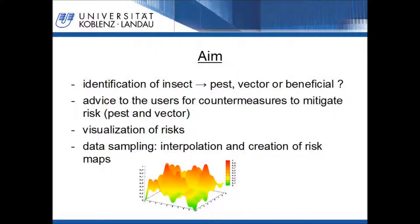Now to the aim — what we want to achieve with this method. We want to combine existing software tools, with which it is possible for a local farmer to identify to which species an insect belongs to. In the next step, the farmer shall be informed about if the insect is a pest, a vector, or beneficial, and about countermeasures if necessary. One aim is also to visualize the risk at a current location, i.e. the risk to get malaria or to get exposed to pesticides. Another aim might be to sample data about the presence of species acting as a pest or a vector, and thus to generate distribution maps, and in a further step also risk maps.